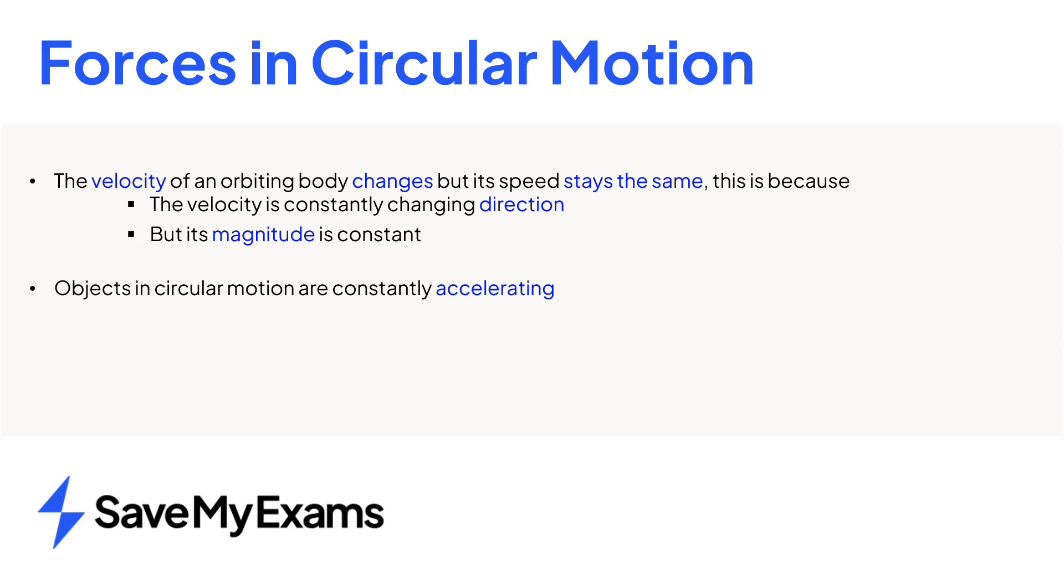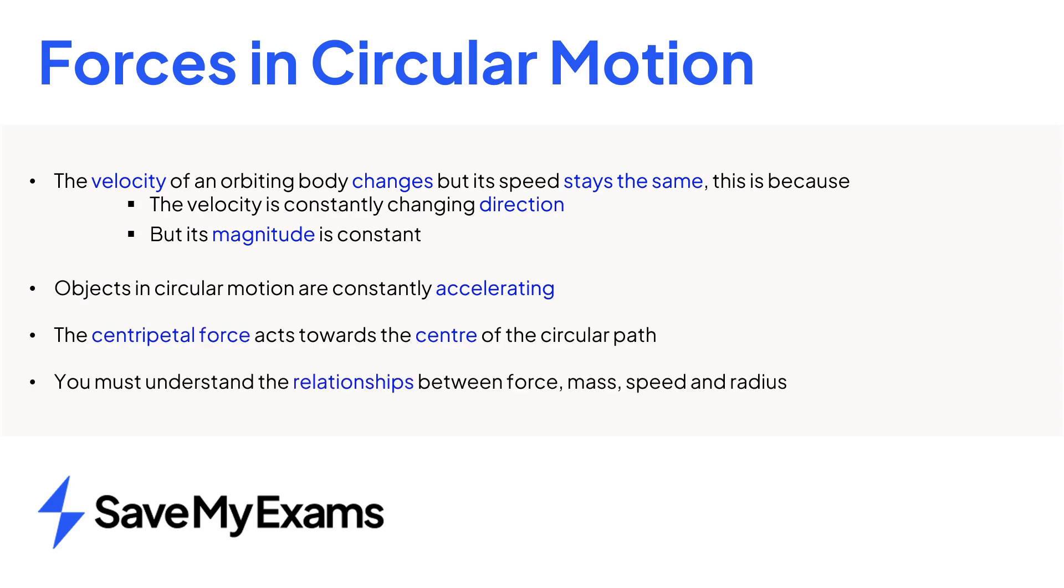Changing velocity means objects on a circular path are always accelerating towards the centre. This acceleration is caused by a centripetal force. You must understand how changing force, speed, radius, or mass of the object in circular motion affects all the other quantities.